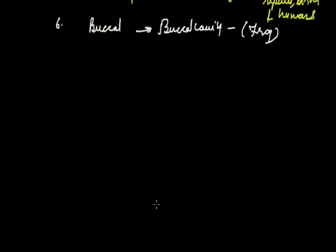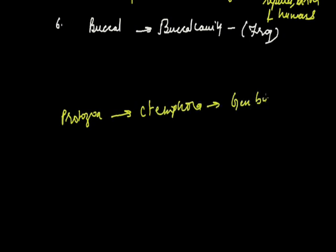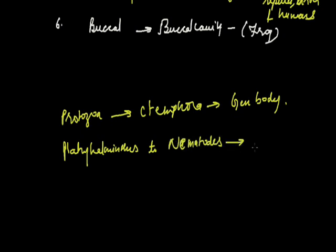Respiration in animals takes place as a single unit, but different organisms have different respiratory organs, so the mode of respiration varies. However, the basic mechanism is the same. From phylum Protozoa to Ctenophora, respiration occurs through the general body surface. In phylum Platyhelminthes to Nematoda, organisms are mostly anaerobic endoparasites. In phylum Annelida, cutaneous respiration occurs. From phylum Arthropoda onwards, various respiratory organs like trachea, gills, and lungs were developed.